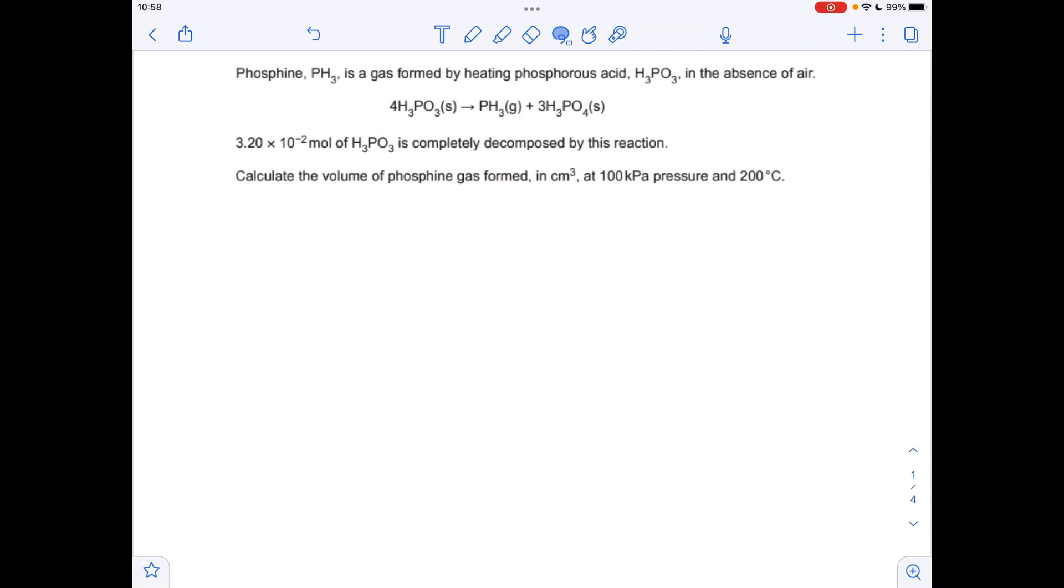Okay so make a start. The first question is an ideal gas question. We've got the pressure, we've got the temperature, and we can calculate the moles of PH3 formed from the amount of moles of H3PO3 that's reacted. To get the moles of PH3 we're just using the ratio between H3PO3 and PH3, it's 4 to 1, so we divide the moles of the acid by 4 and we get the moles of PH3.